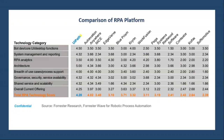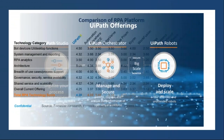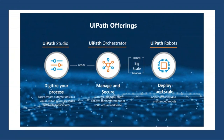UiPath scores lower in RPA analytics compared to Automation Anywhere. This is because this graph was generated last year in June, and at that time UiPath didn't have much integration capability with analytical platforms like Power BI, Tableau, and Click. However, now UiPath has integration capabilities with all these platforms and ready-made activities, so better ratings can be expected in the latest version.